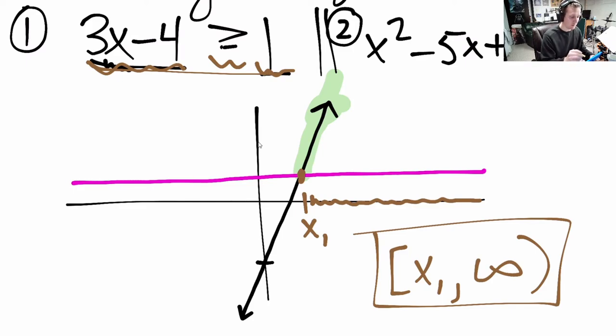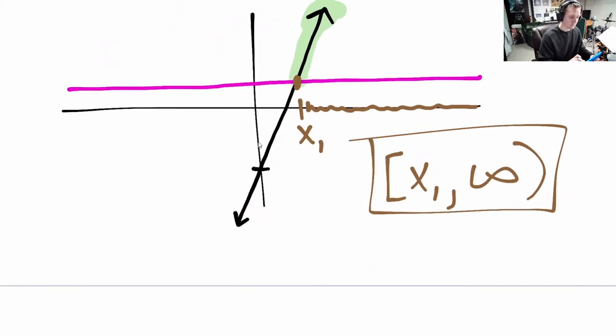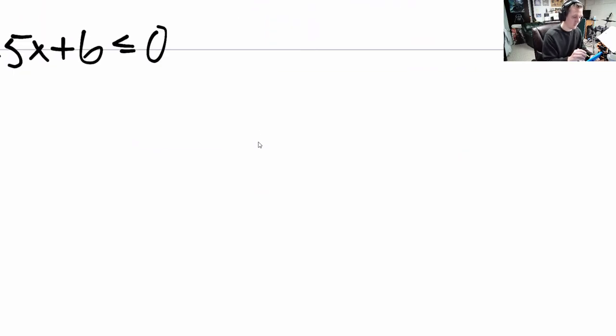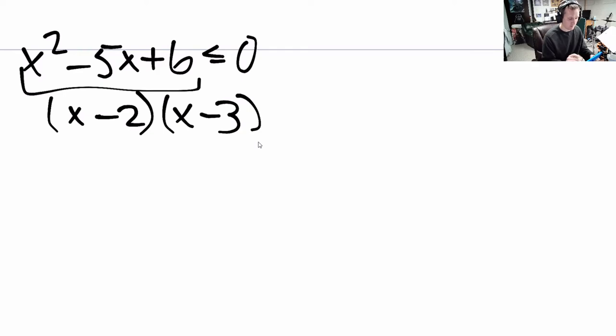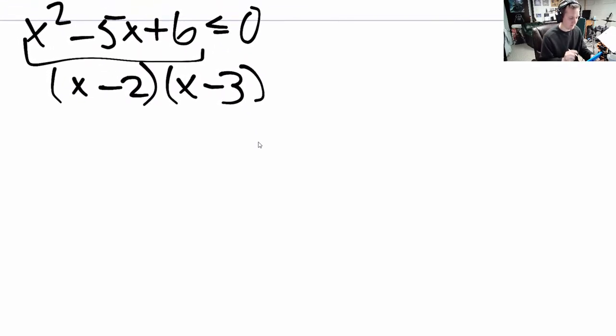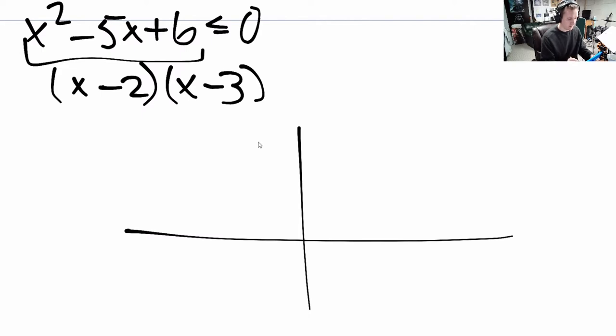The next example, question or equation 2 here, asks this question: solve x squared minus 5x plus 6 less than or equal to 0 graphically. Well, we need the graph. To help myself out, I'm going to real quickly factor this. It's x minus 2, x minus 3. That's a nice way to graph a parabola because if you know the factors, then you know the zeros: 2, 3. Here's 1, here's the y-axis.